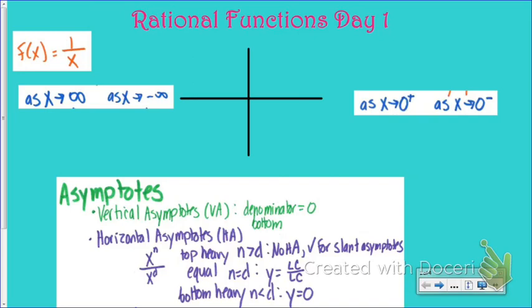If we were to plug in some points — for example, if I plug in 1 for x, I would get a value of 1, so (1, 1) would be a point. If I plug in negative 1, then (negative 1, negative 1) would be a point. If you remember what this parent function looked like, it was the one that looked a little bit like this.